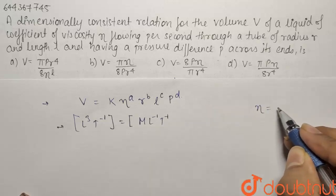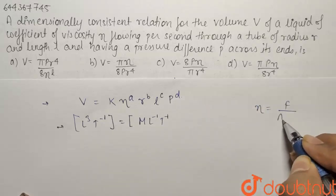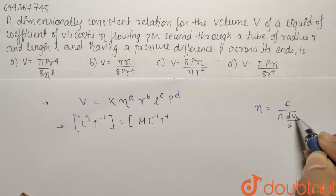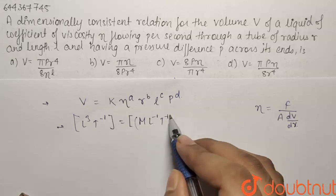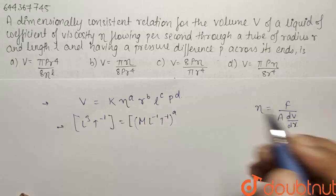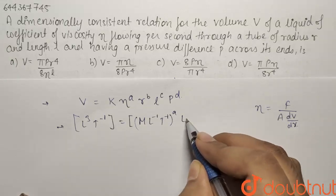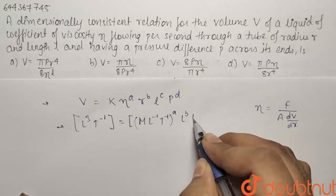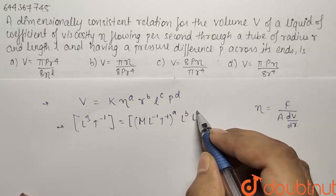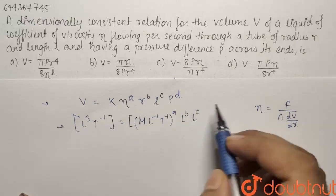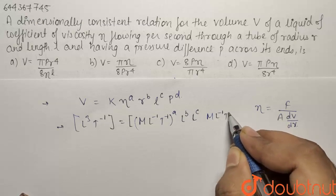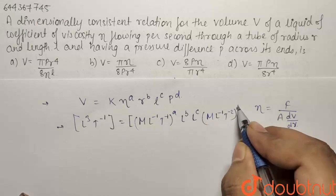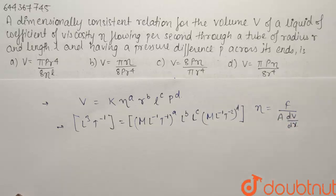What is eta? It is eta is nothing but force per unit area per unit velocity gradient. So this is how eta is defined. So it is M minus 1 L minus 1 T minus 1 to the power A multiplied by radius that is length to the power B multiplied by again the length that is L to the power C multiplied by the pressure. Now pressure has the dimension ML minus 1 T minus 2 to the power D. So for this to be true the dimension of LHS is equal to dimension of RHS.